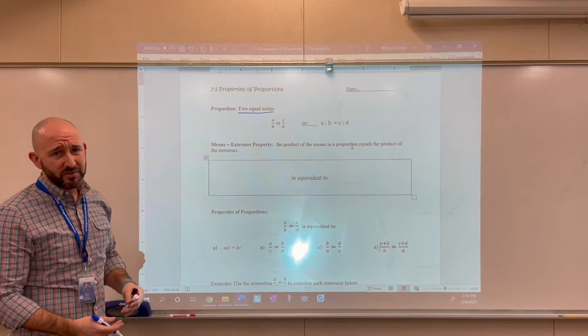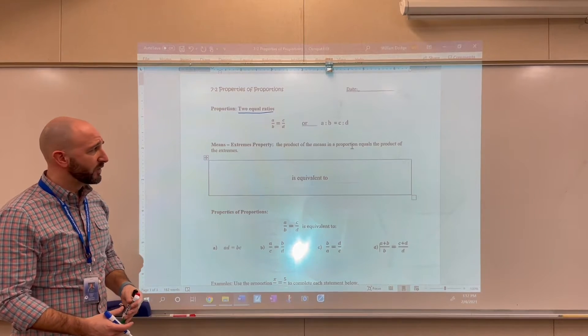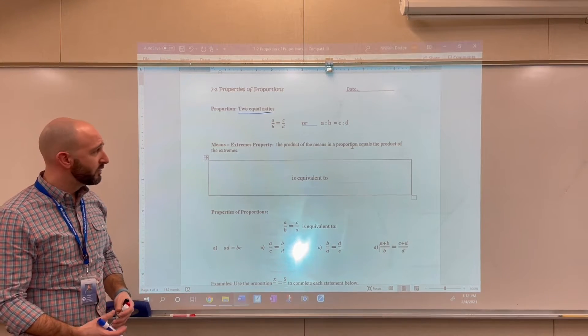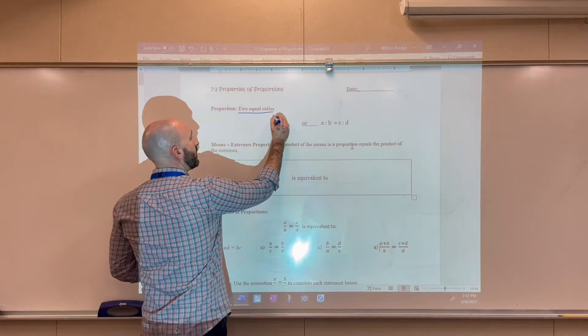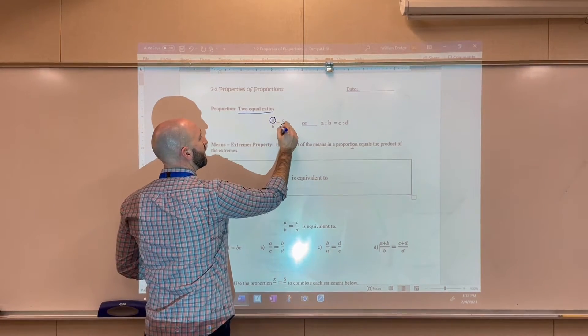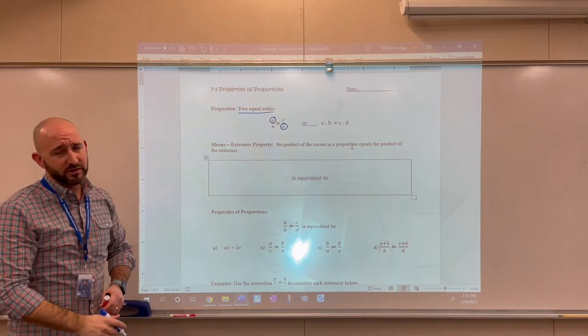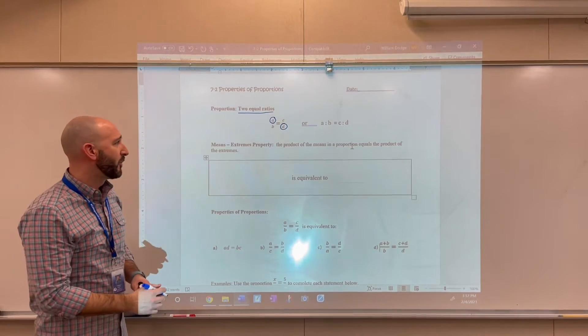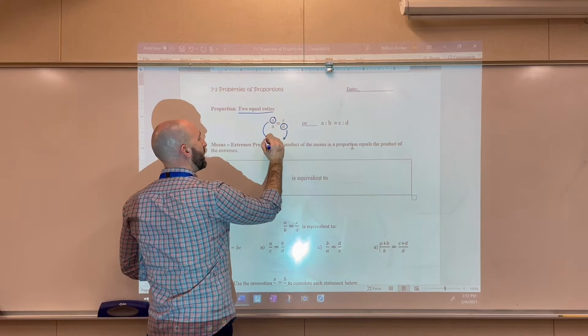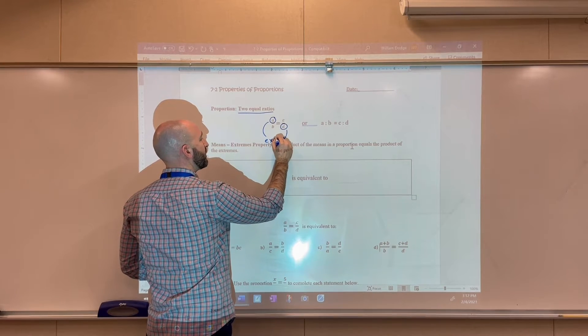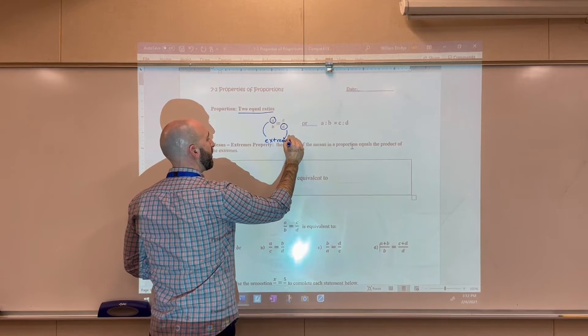Now, a few terms that I want to talk about and it really deals with the position of the numerical values in those proportions. So A and D occupy positions in that first proportion, and they are called the extremes.